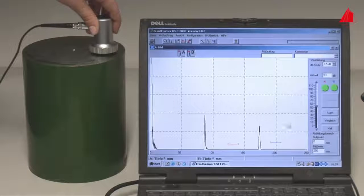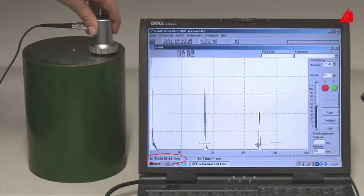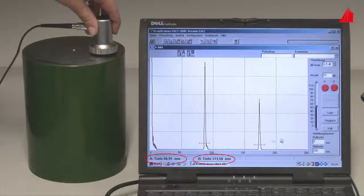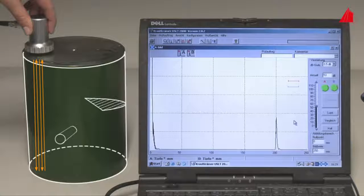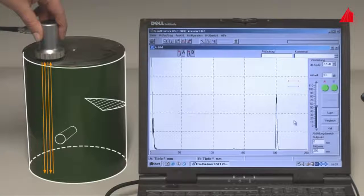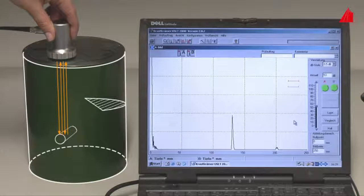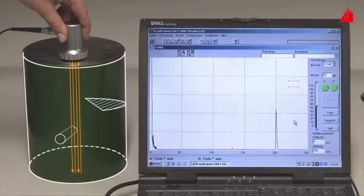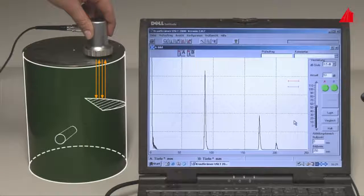Another echo indicates a defect in a depth of 87 millimeters. The second smaller echo at 174 millimeters is caused by double reflection on the same imperfection. And these are the defects: a drill hole and a saw cut, filled up near the surface and painted, they are not visible from the outside. The drill hole in a depth of 130 millimeters, the saw cut 87 millimeters below the surface.